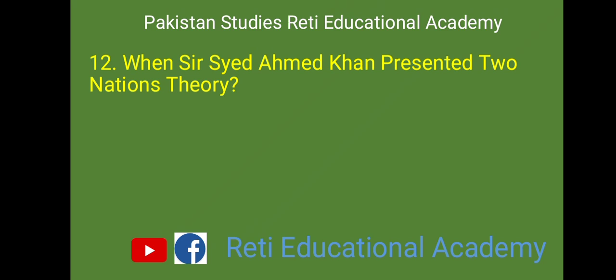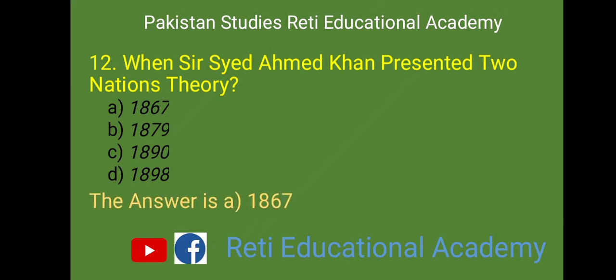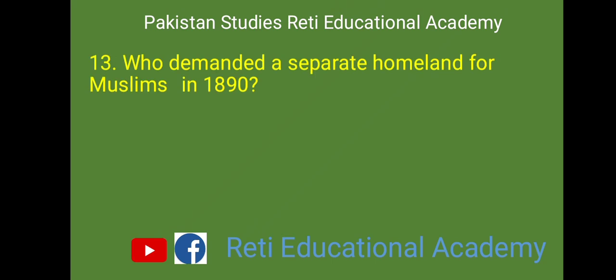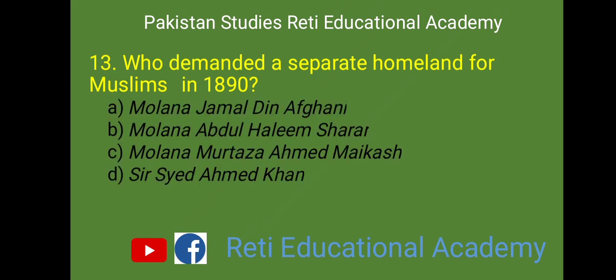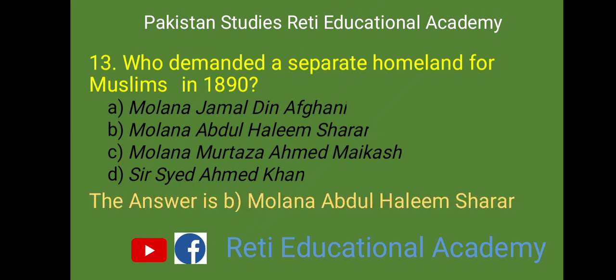MCQ number 12: When did Sir Sayyid Ahmad Khan present the Two Nations Theory? A. 1867, B. 1879, C. 1890, D. 1898. And the right answer is B. Maulana Abdul Halim Sharar.